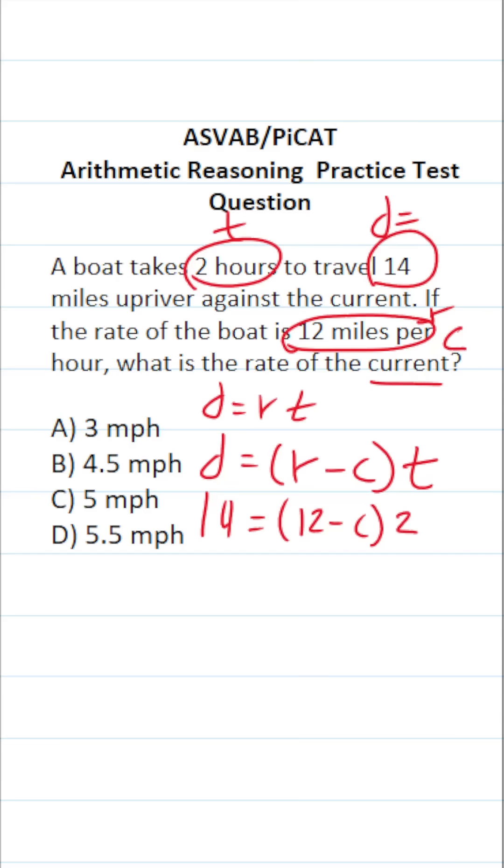So to solve this equation for C, let's start by dividing both sides by two. This crosses out, leaving you 12 minus C over here. 14 divided by two is seven. Let's subtract 12 from both sides. Now in doing so, this crosses out, leaving us with negative C. Seven minus 12 is going to be negative five.